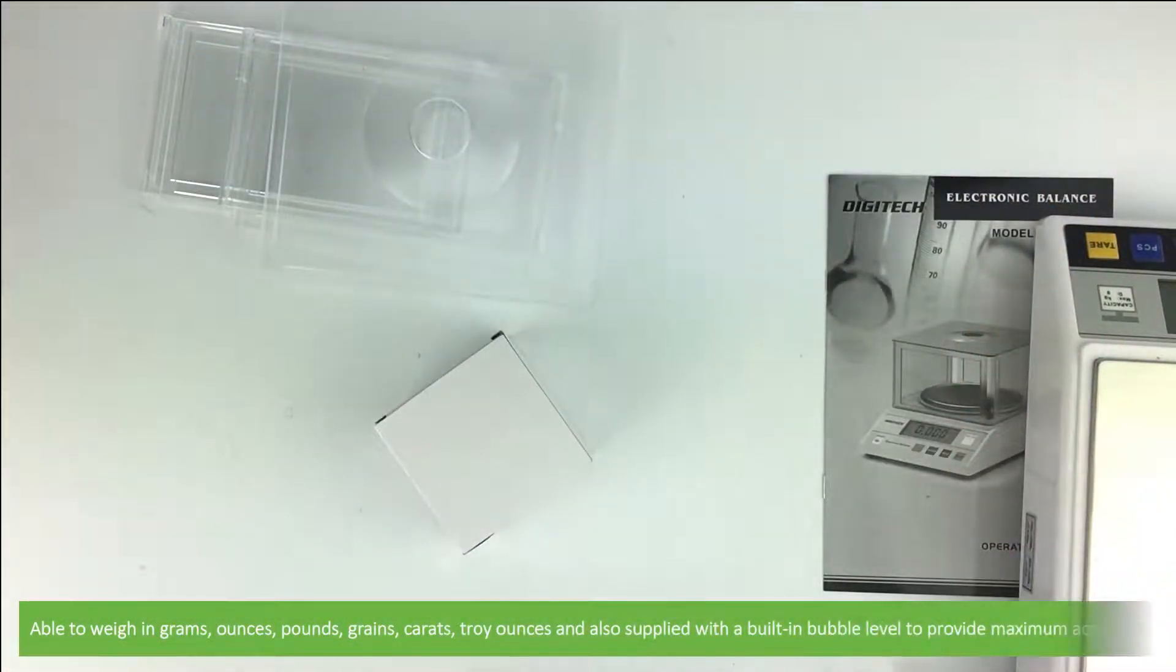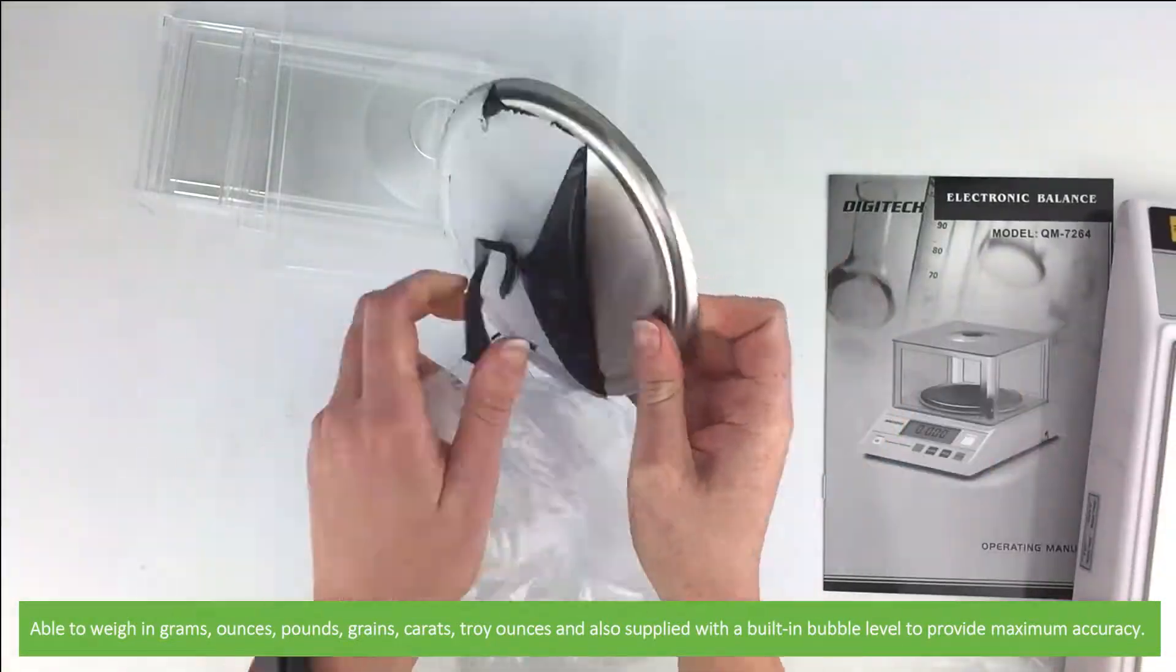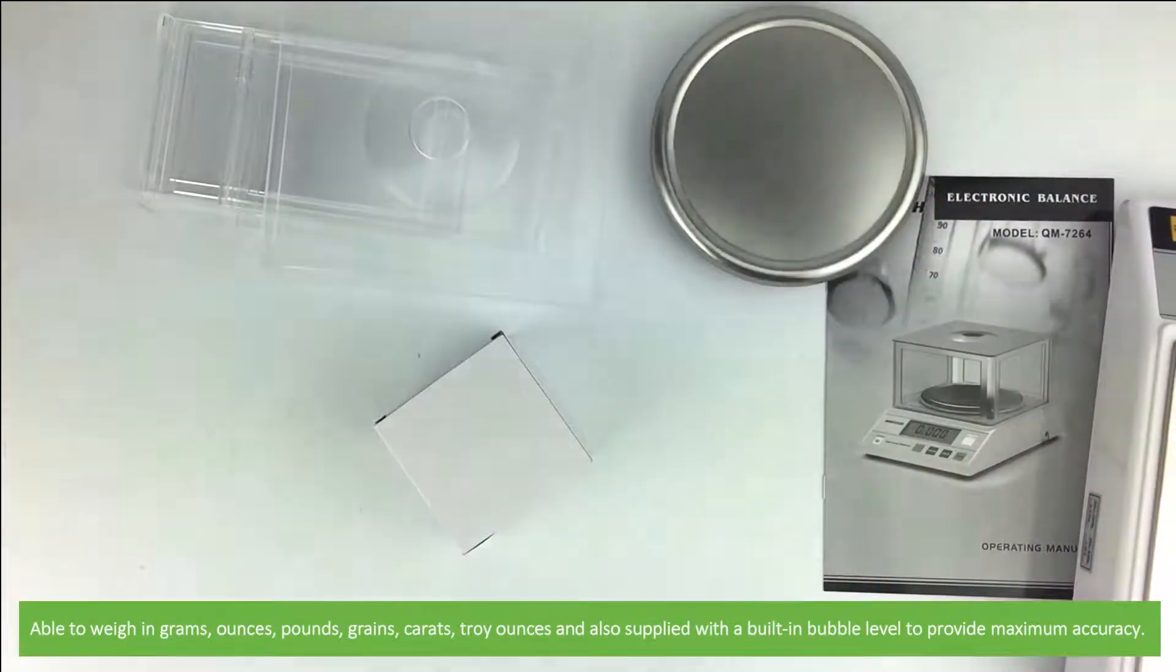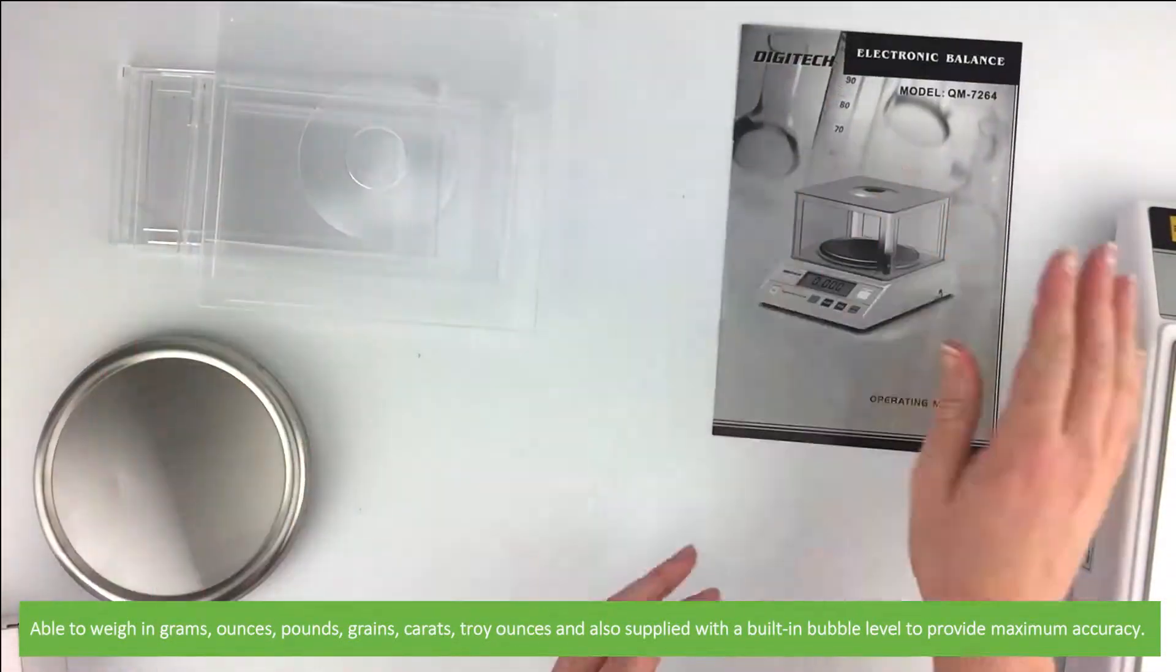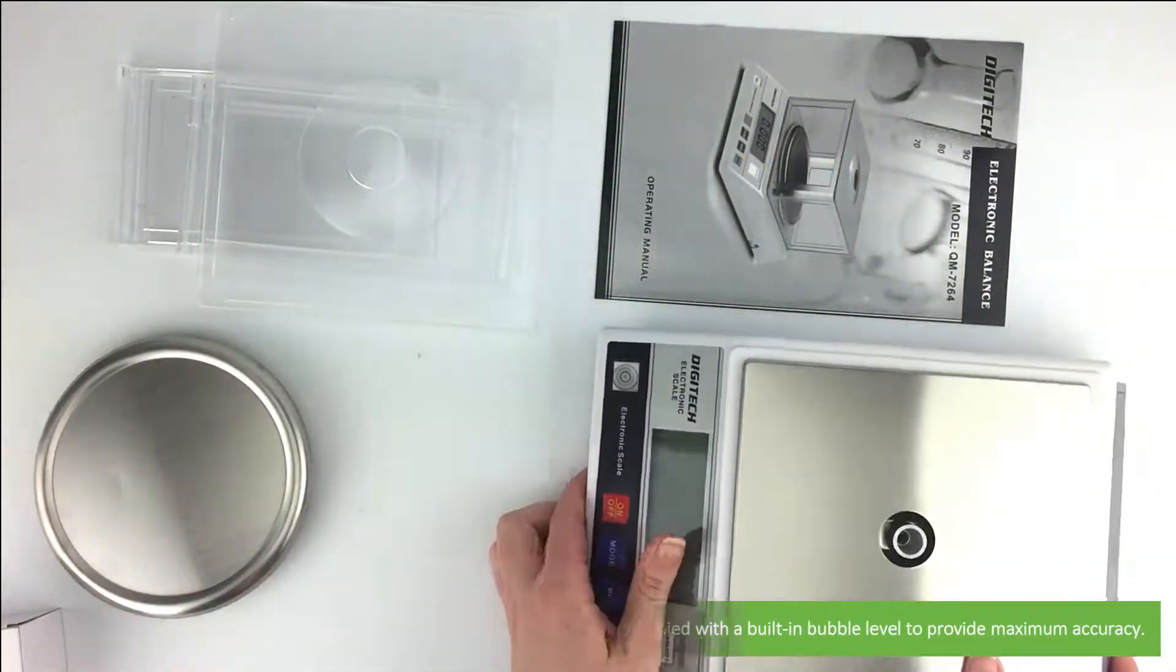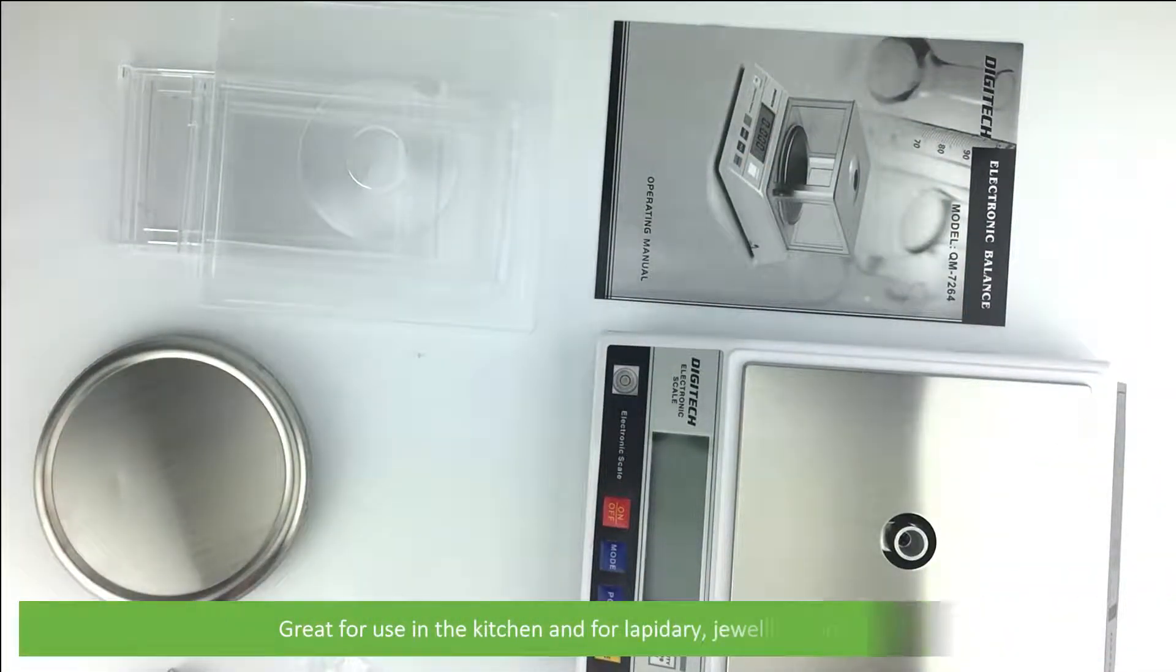Able to weigh in grams, ounces, pounds, grains, carats, troy ounces, and also supplied with a built-in bubble level to provide maximum accuracy. Great for use in the kitchen and for lapidary, jewelry, and more.